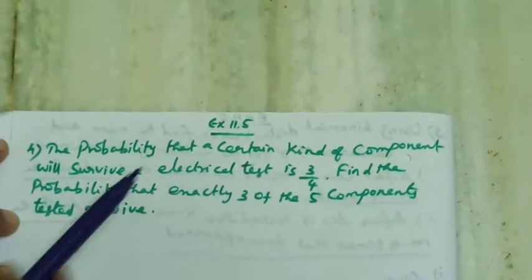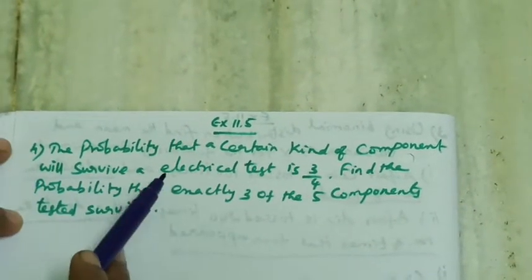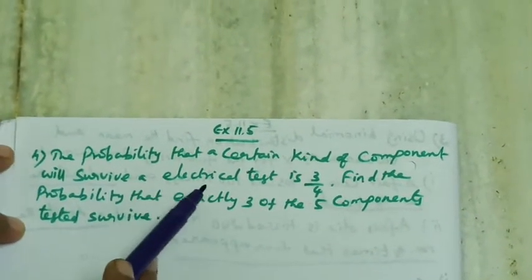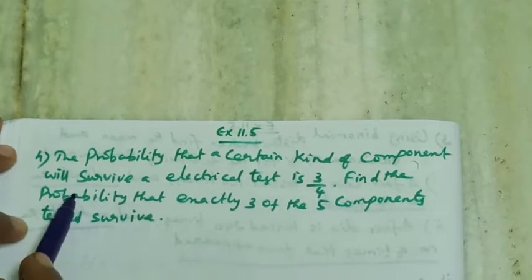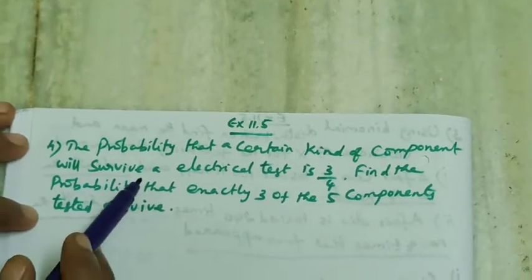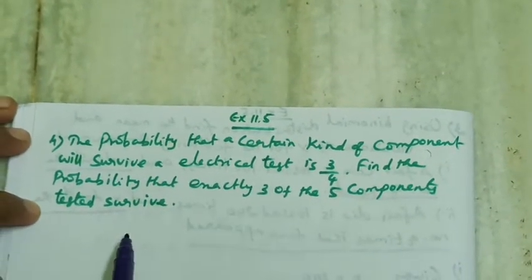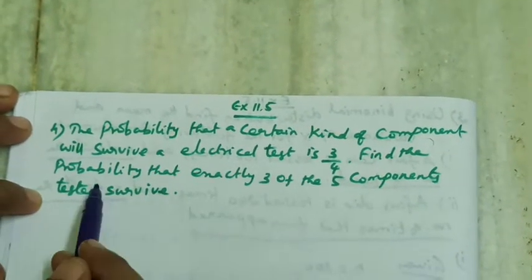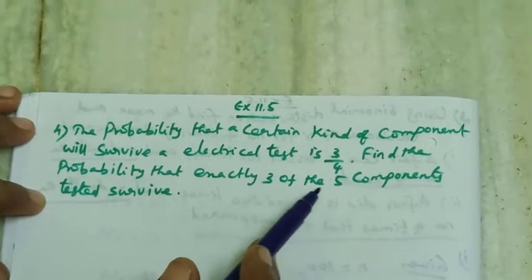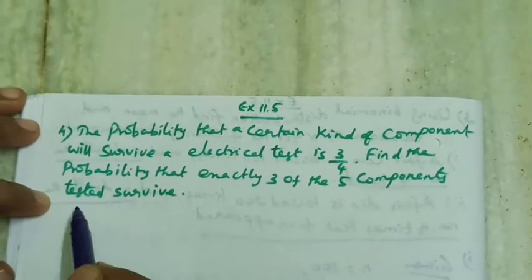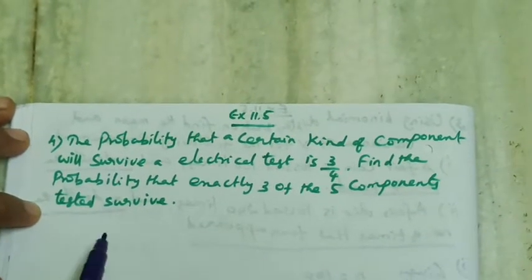Good morning students. Exercise 11.5, problem 4-7: The probability that a certain kind of component will survive the electrical test is 3/4. Find the probability that exactly 3 of the 5 components tested survive.